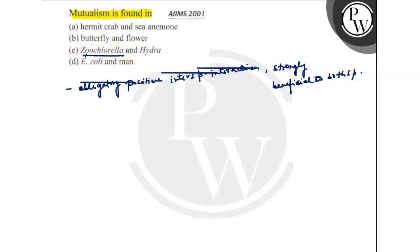Zoochlorella lives symbiotically in the outer tissue of coelenterates. The algae are photosynthetic and produce oxygen and food beneficial to the host. In exchange, they obtain materials like carbon dioxide and nitrogenous waste released by metabolism of the host cell. That's why mutualism is found in zoochlorella and hydra.